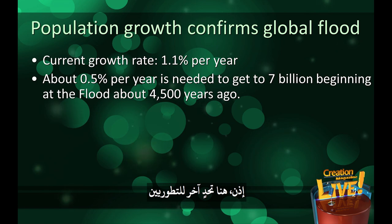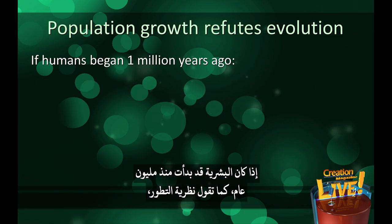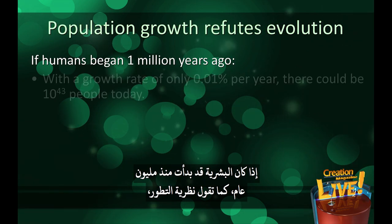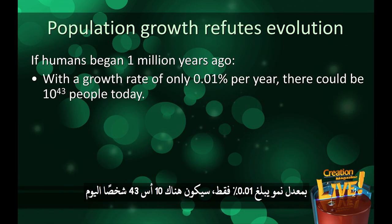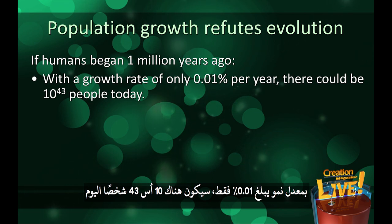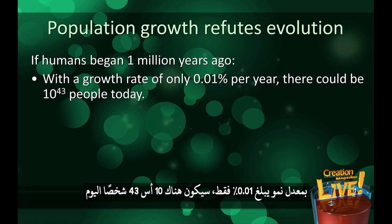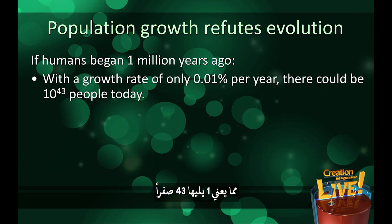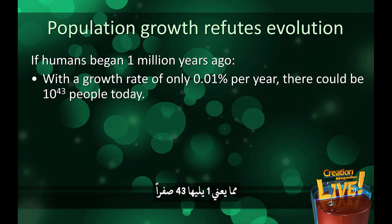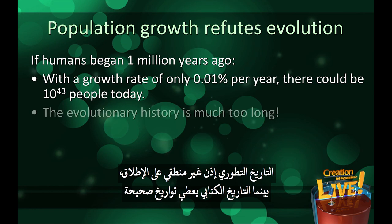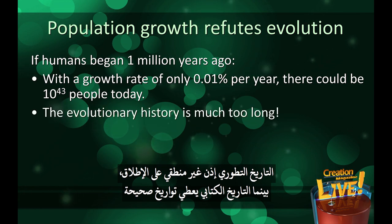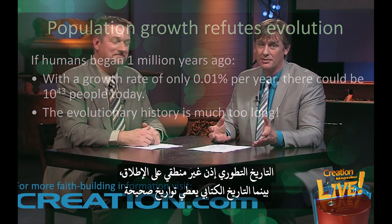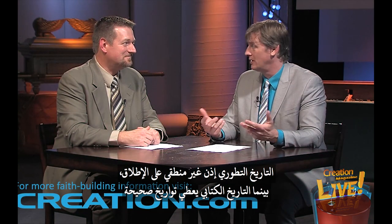Here's a challenge for evolutionists: if humans began 1 million years ago as evolution says, with a growth rate of only 0.01%, there would be 10 to the 43rd power people today — that's a 1 with 43 zeros behind it. The evolutionary history is way off here, while biblical history gives the right dates.